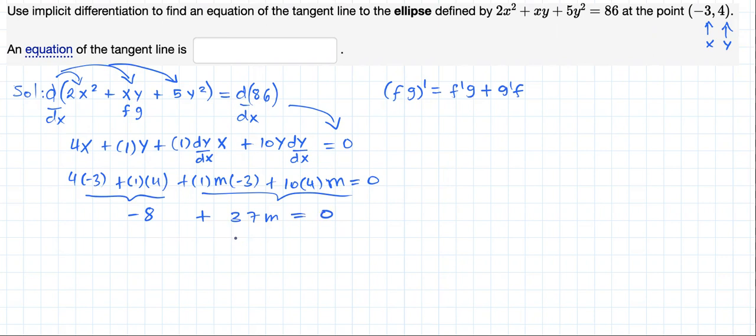Adding 8 to both sides of this equation, we get that 37m equals 8. Dividing both sides by 37, we get that the slope of the tangent line is 8 over 37.